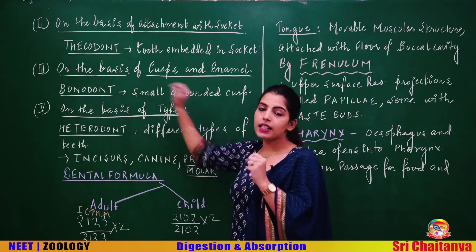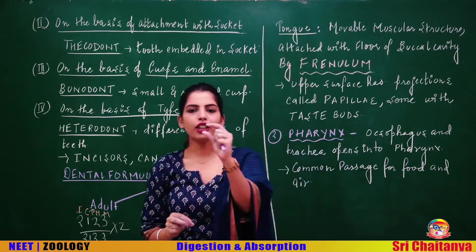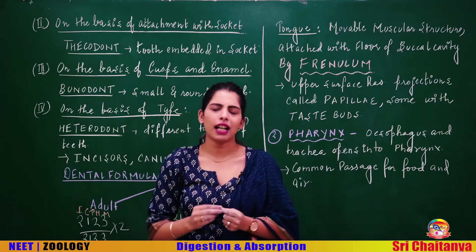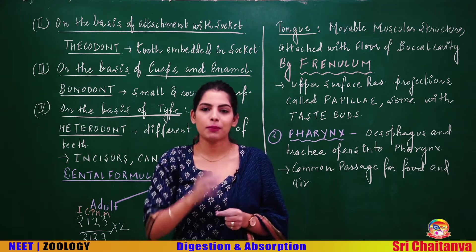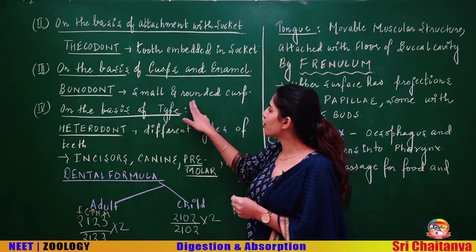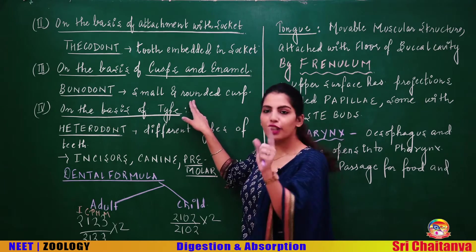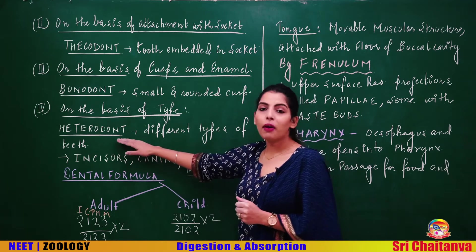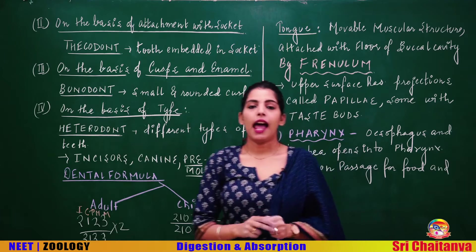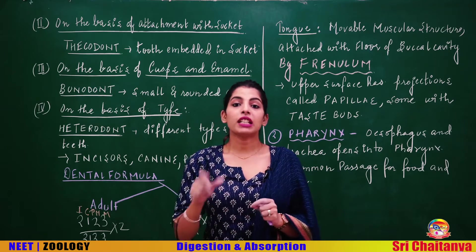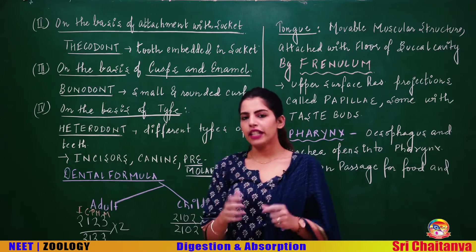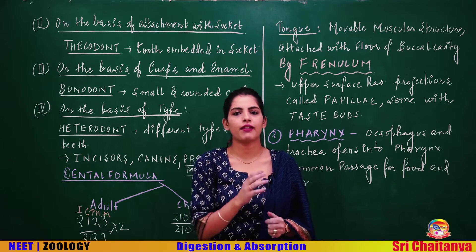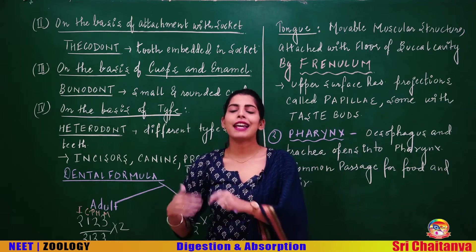On the basis of cusp and enamel, human teeth have very small rounded cusps — this is called bunodont type of dentition. On the basis of how many types of teeth we have, humans are heterodont — hetero means different types. We have different types of teeth: incisors, canine, premolars, and molars.